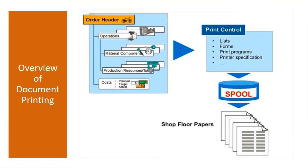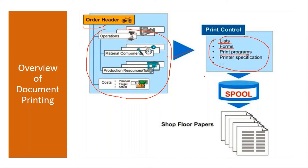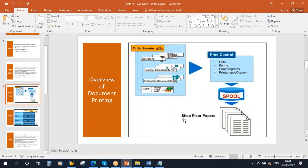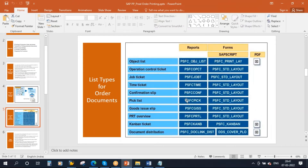Once the production order is created and released, they will do the printing using various lists and types of documents, along with various forms. I will show you all these things in the system. There are print programs available, and once all these settings are in place, the system will generate a spool. In the spool you can see the printouts, and from there you can take the actual physical paper print. Various types of shop floor papers can be generated, such as the operation list or the component list.